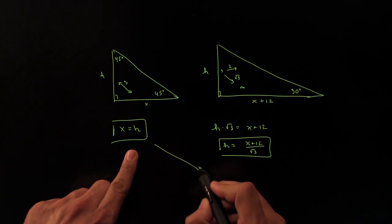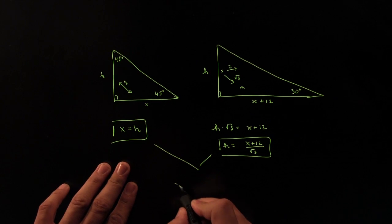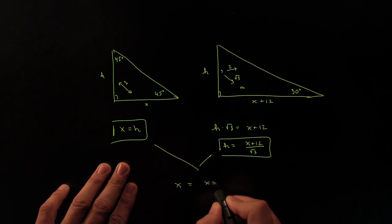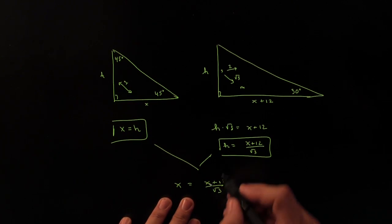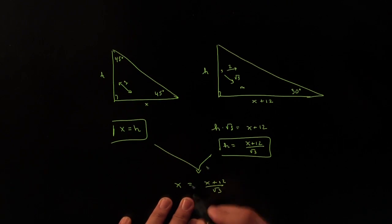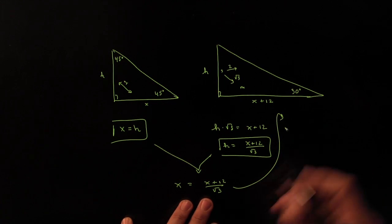Combining these two equations into one produces the idea that X must be equal to X plus 12 divided by the square root of 3. And that gives us one equation with one unknown. And that's beautiful, because that means we can solve it.